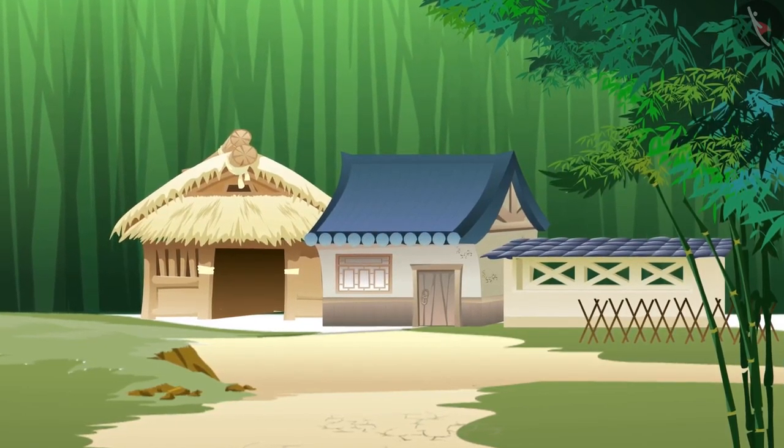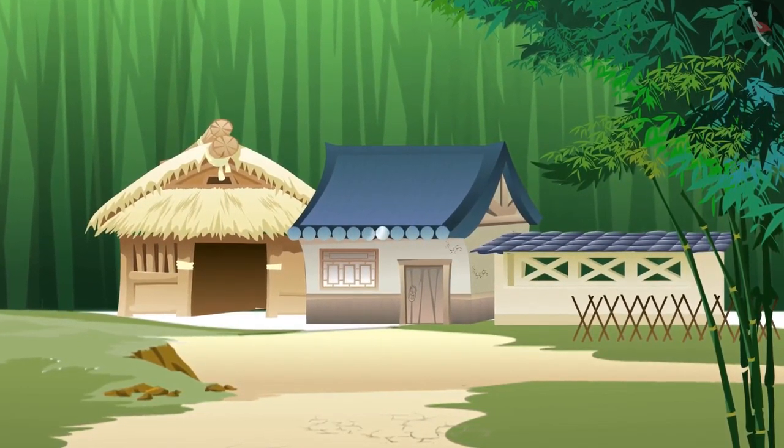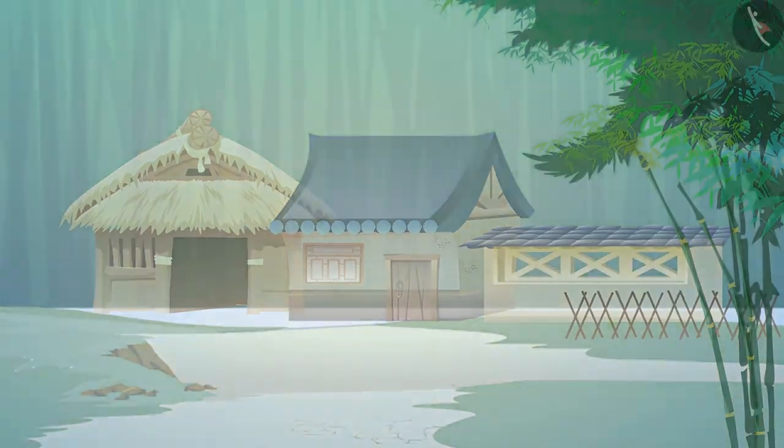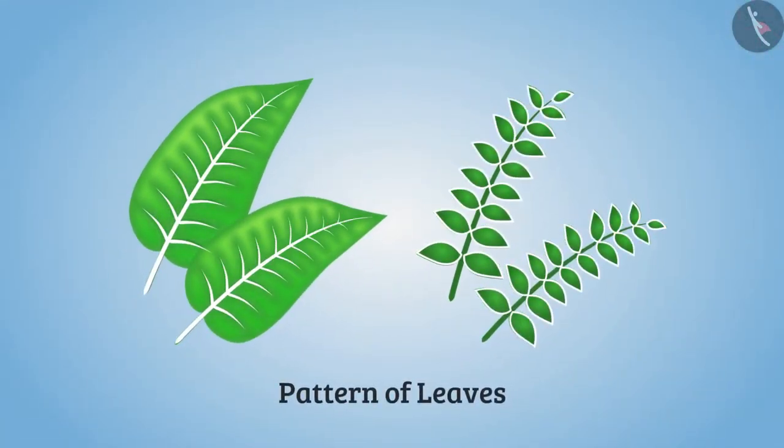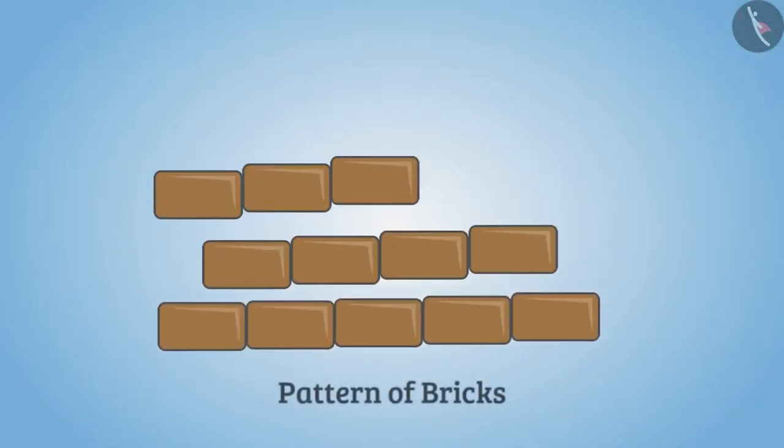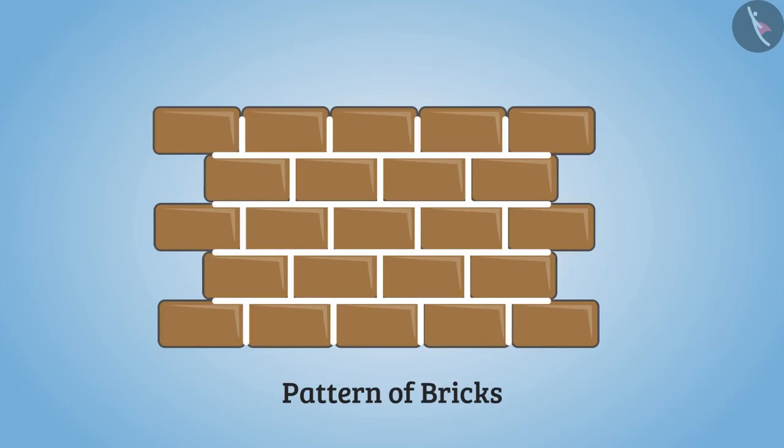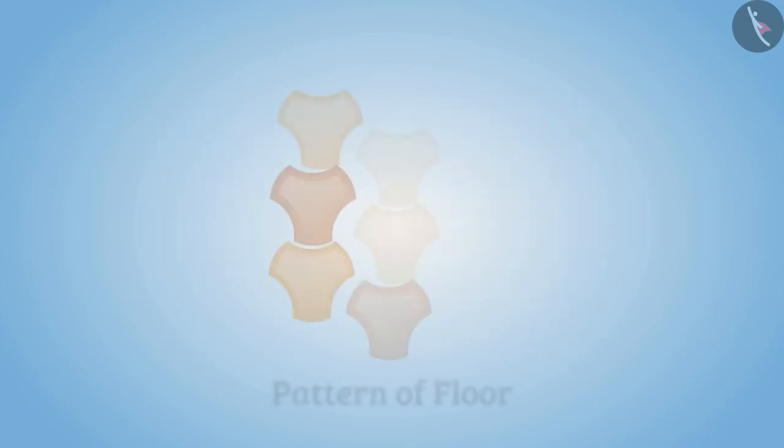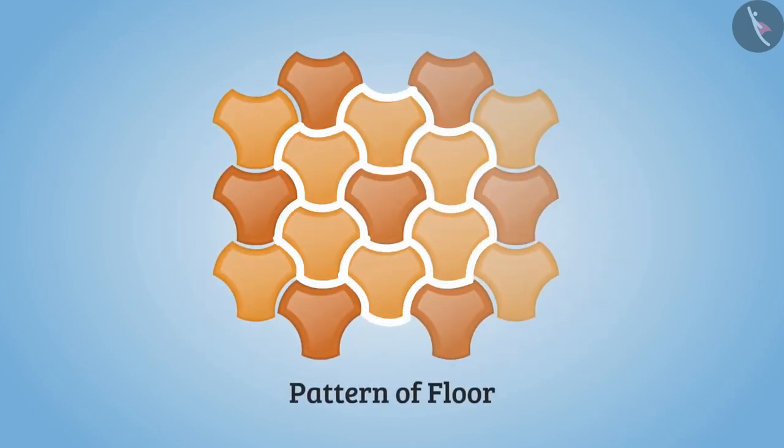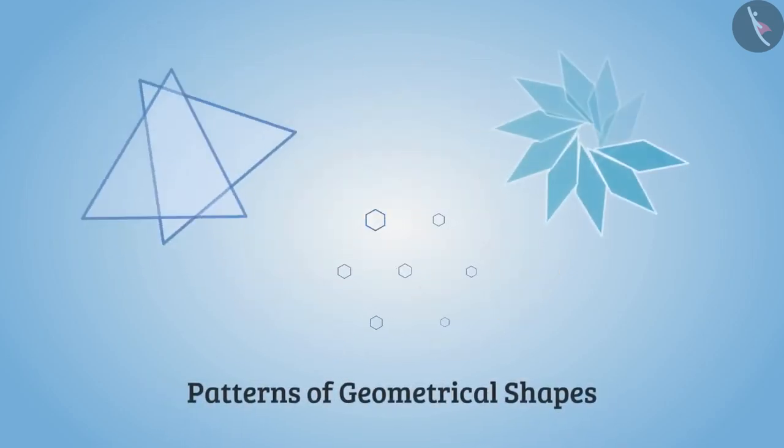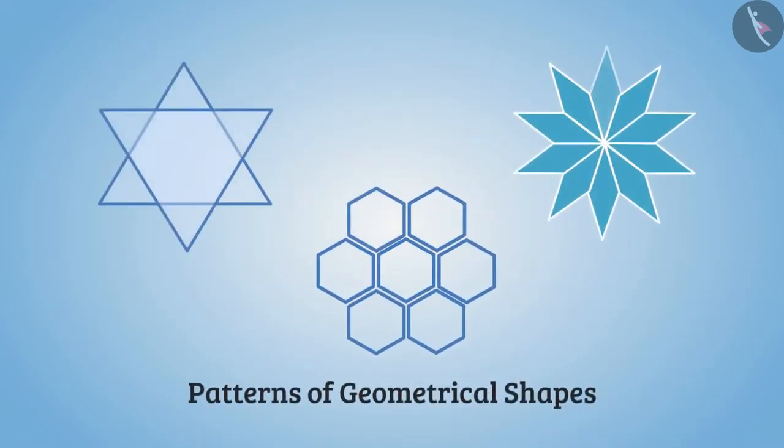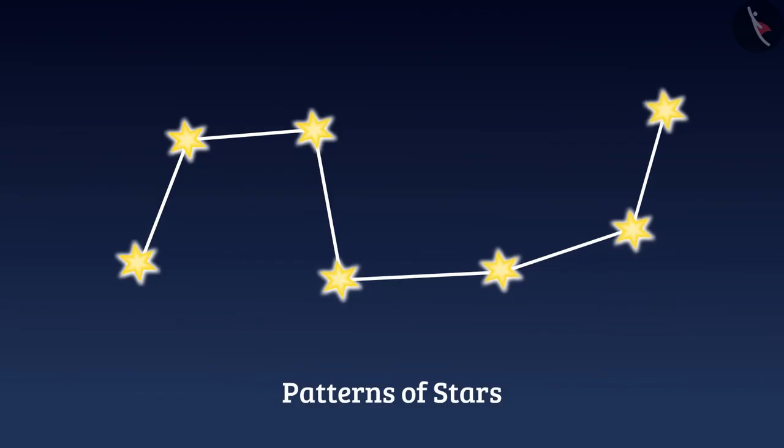Everywhere in our surrounding we see different patterns such as pattern of leaves, pattern of bricks, pattern of floor, patterns of geometrical shapes, patterns of stars and many more. Every pattern is based on some rule.